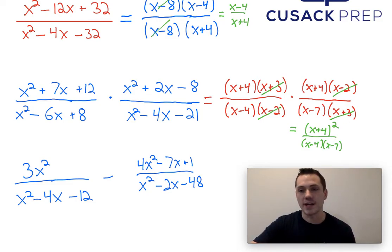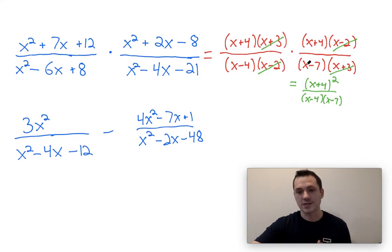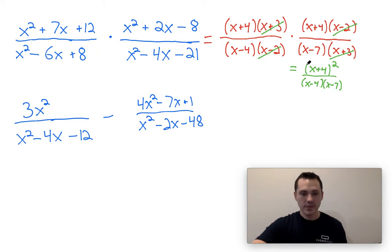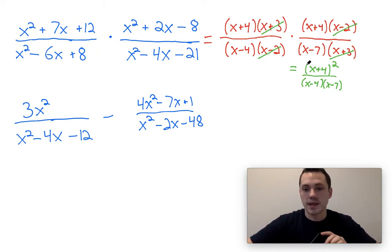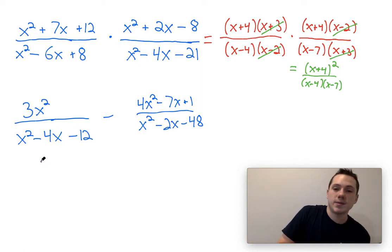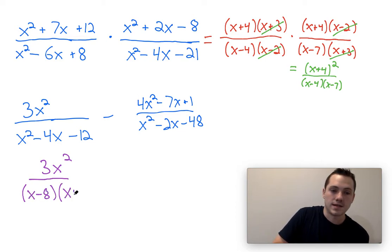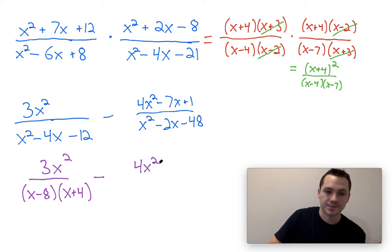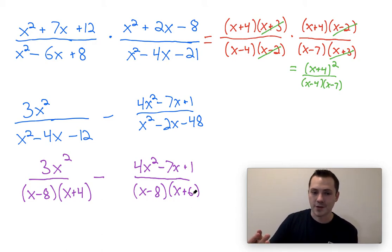Now, looking at the final question that we have here, I would say this is definitely the most challenging topic with operations with rational expressions, because it involves adding and subtracting fractions, which is a little bit more difficult than just multiplying or dividing. So let's say we wanted to solve this. Again, we're going to start the same exact way we did last time, and we're going to factor. We can factor this bottom into (x - 8)(x + 4), and I can factor the bottom into (x - 8)(x + 6). So now we've got two fractions with everything factored. What can we do next?